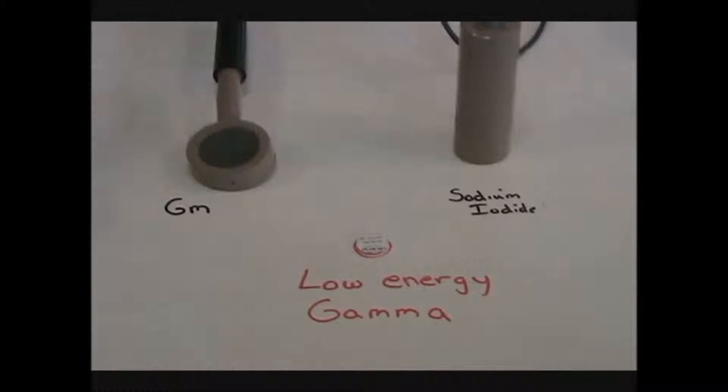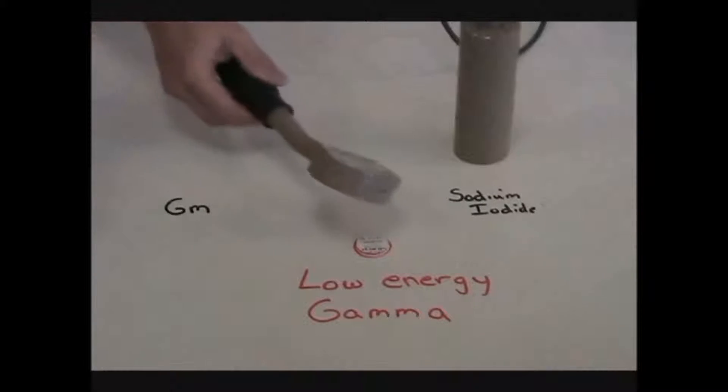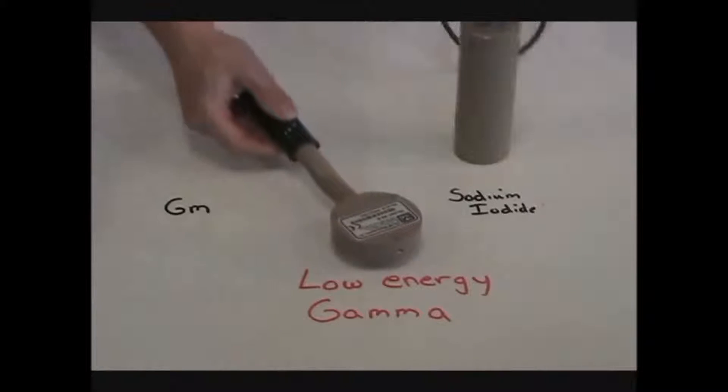Note that different detectors measure radiations more efficiently than others. If you are using a GM to measure gamma, then the efficiency is about 1% for high energy and much less for low energy.